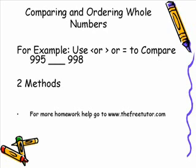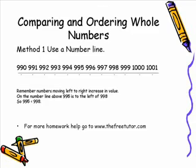Say for example we want to compare 995 with 998. Typically when we compare numbers we use the greater than, less than, or equal signs to compare the numbers. There are two methods for comparing and ordering whole numbers. The first method is we can use a number line. As you can see here in this picture, we have our number line set up going from 990 all the way to 1001.